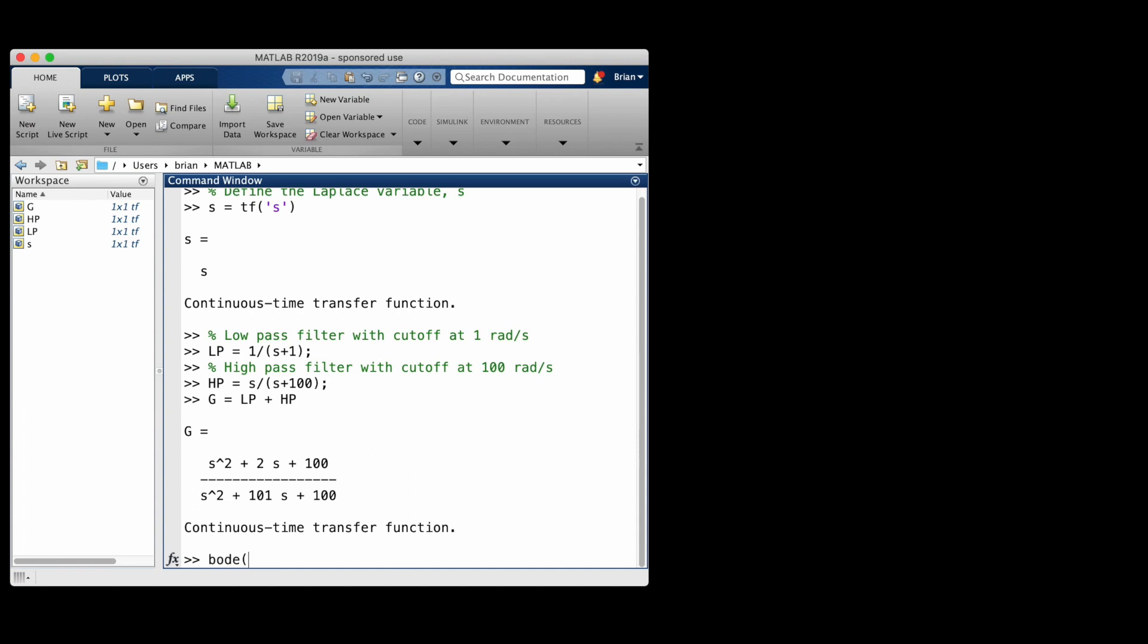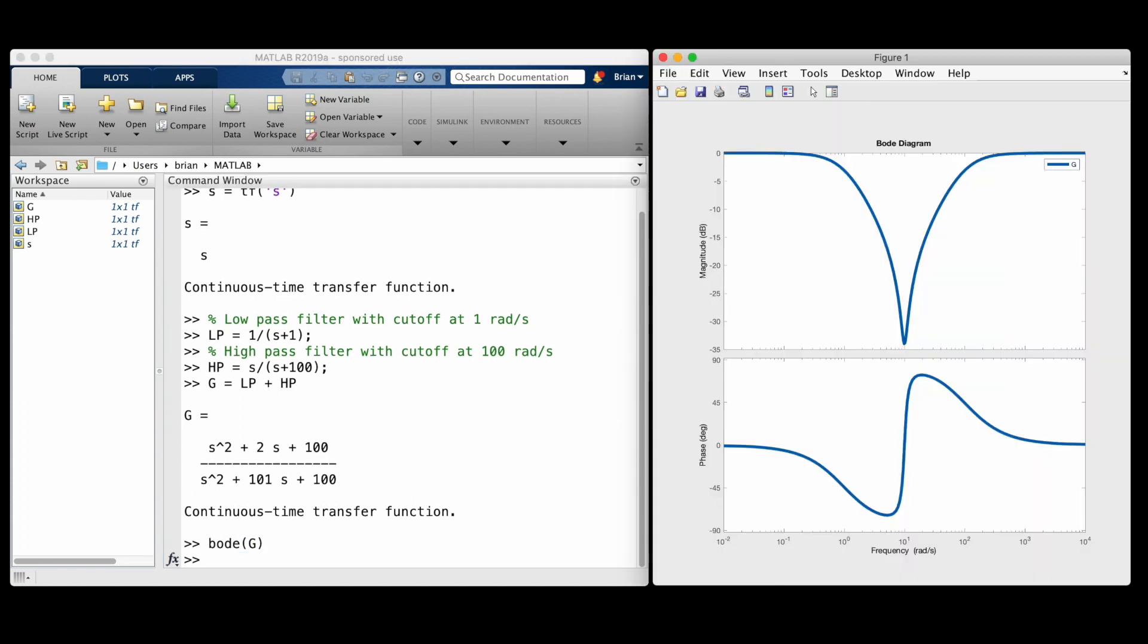The frequency response for this transfer function looks a lot like what we expected. There's the V there, and the middle of the band is attenuated by almost 35 decibels, which is pretty good.